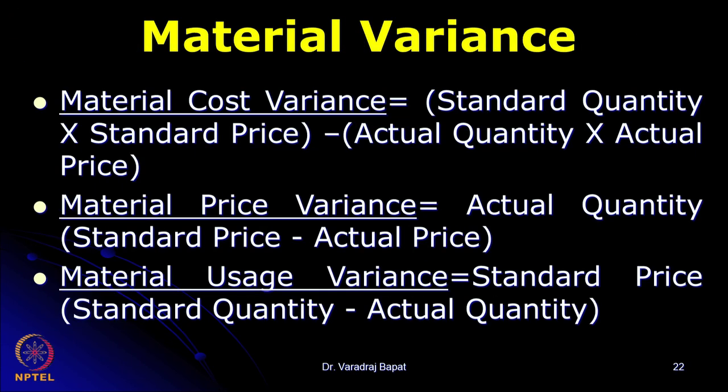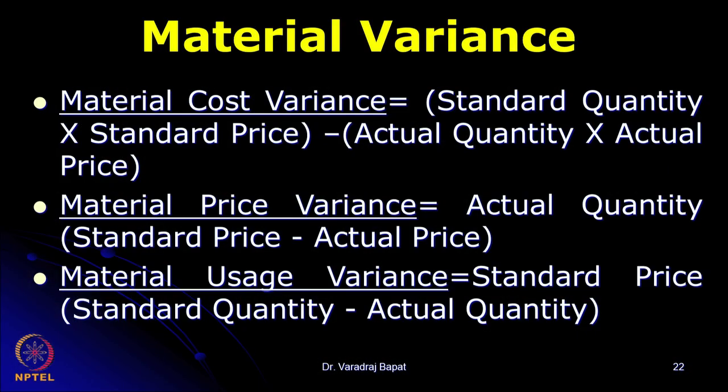We have discussed these simple formulas to break down the material variances into its causes. The total material cost variance is the difference between standard cost and actual cost — that is standard quantity into standard price minus actual quantity into actual price. Material price variance is standard price minus actual price in bracket, multiplied by actual quantity. For usage variance, it is standard quantity minus actual quantity, multiplied by standard price.